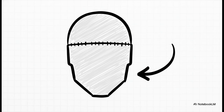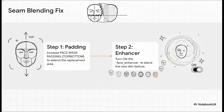The final nightmare is the dreaded floating forehead — that visible seam, that harsh, unnatural line across the forehead or chin where the new face is stitched on. This usually happens when your source and target faces have different head shapes. The solution is a clever two-step process. First, use the face mask padding — adding a tiny value to the top padding literally extends the swap area a little bit higher up the forehead, right over that ugly seam. Then, for this specific problem, turn on the face enhancer. It generates a matching skin texture in that new padded area and blends the border perfectly.